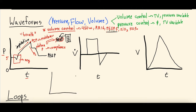The last loop we'll discuss is the flow-volume loop. Inspiration is on top — positive flow — and expiration is on the bottom. You want it to have a nice smooth contour. Abnormalities to look for include a sawtooth pattern or a scoop pattern — these mean different things, whether related to obstruction, mucus, or other causes. The flow-volume loop should follow a nice inspiratory-expiratory contour on the ventilator.